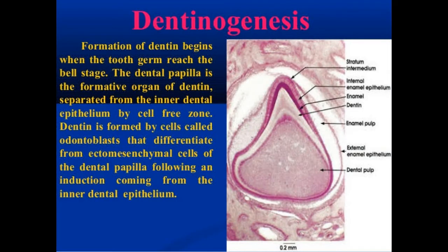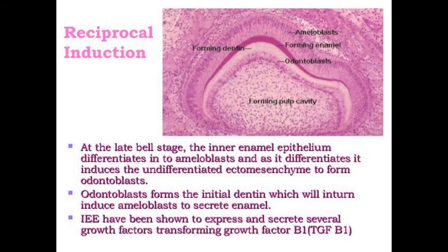Both pulp and dentin form from the same tissues called dental papilla. Thus the pulp contains the cells which form the dentin, i.e. odontoblast. Pulp secretes the organic matrix for dentin and also takes part in its calcification. The second function is induction. Through reciprocal induction, pulp helps in the formation of enamel through dentin. After the pulp forms the dentin through odontoblast, the dentin will induce ameloblast to secrete enamel. Thus pulp has an important role in reciprocal induction.